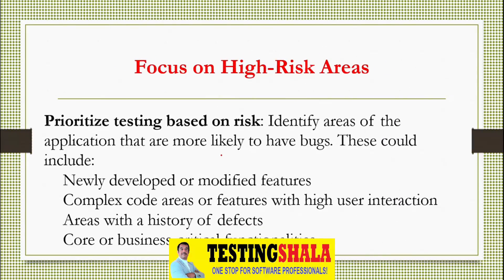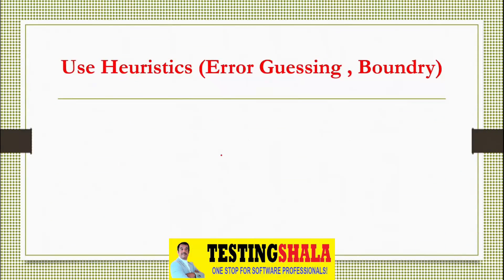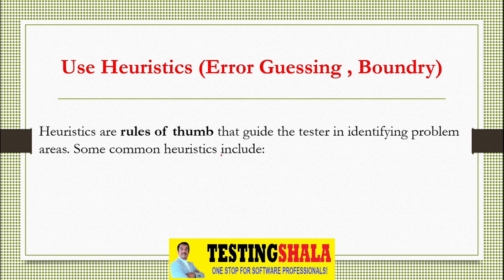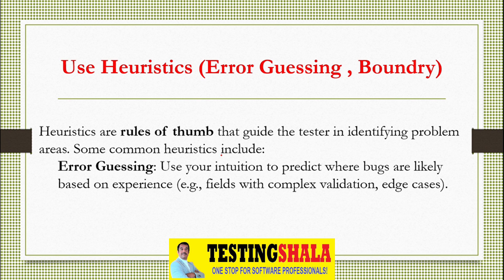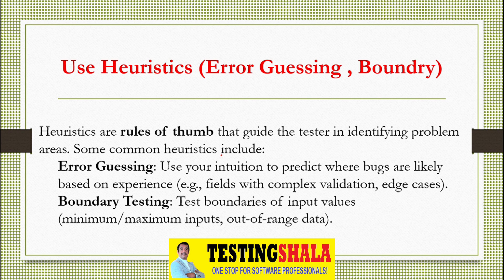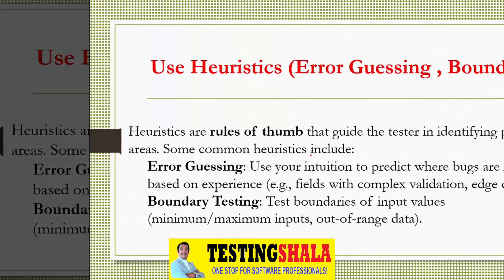The next one is using heuristic methods such as error guessing or boundary testing. These are rule-of-thumb techniques. If we follow error guessing or boundary testing, we can definitely find more defects as quickly as possible in the application.